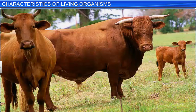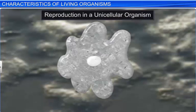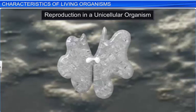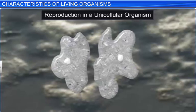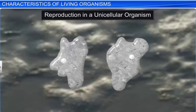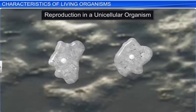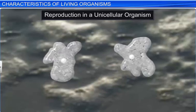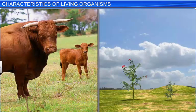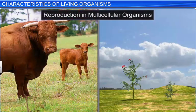Reproduction is another important characteristic of living organisms. In unicellular organisms, reproduction and growth are synonymous, as both lead to an increase in the number of cells. This is not the case with multicellular organisms, where reproduction leads to the creation of an offspring.